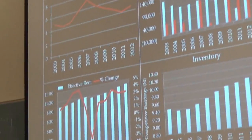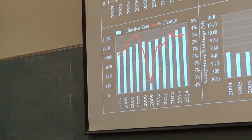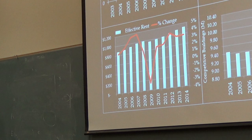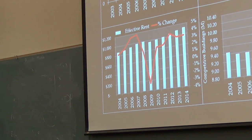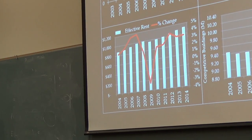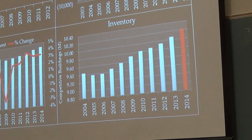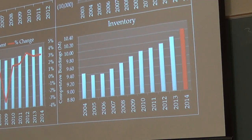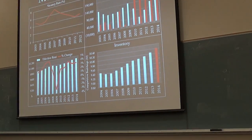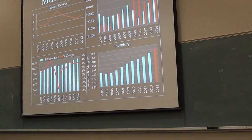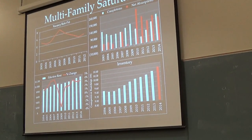The effective rent percentage change went down during the recession but held pretty stable at about 4%. Inventories — the total buildings out there — are gradually increasing, and the 2014 forecast shows a surplus of some sort. From that, we concluded that multi-family is being saturated — just a preliminary analysis.